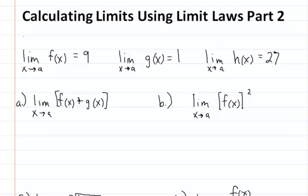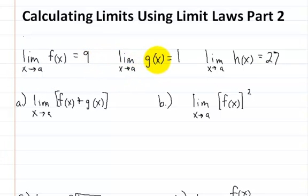Calculating Limits Using Limit Laws Part 2. Here I've written out these answers. The limit of f of x as x approaches a is equal to 9. The limit of g of x as x approaches a is equal to 1. And the limit of h of x as x approaches a is equal to 27.